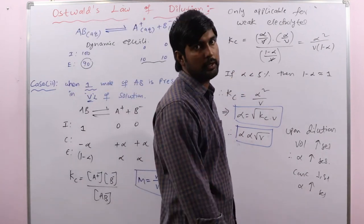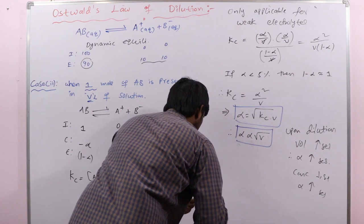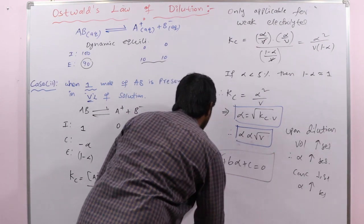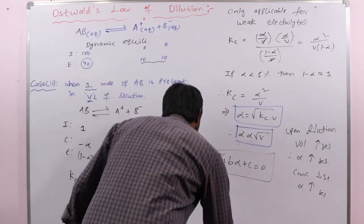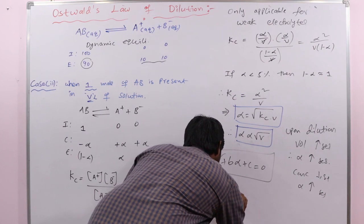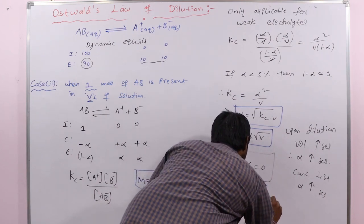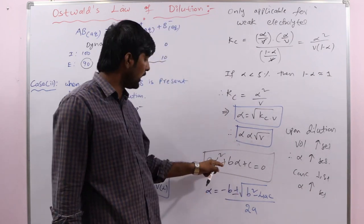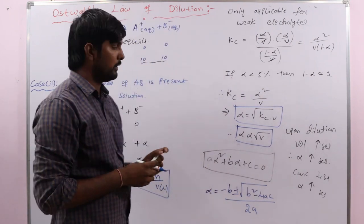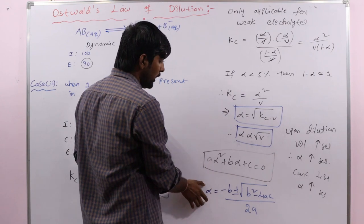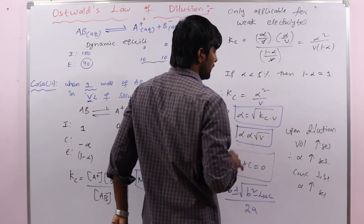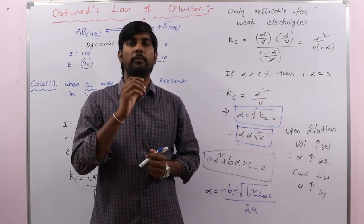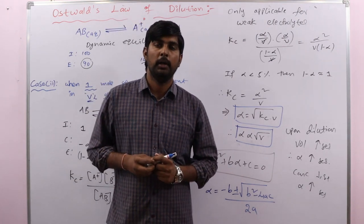If alpha is greater than 5%, then we cannot use the approximation and we get a quadratic equation of the form aα² + bα + c = 0. We solve for alpha using the quadratic formula: α = (−b ± √(b² − 4ac)) / 2a. Otherwise, with the approximation we get the simpler relation directly. In the next lecture we will discuss one of the most important concepts in physical chemistry — the common ion effect.